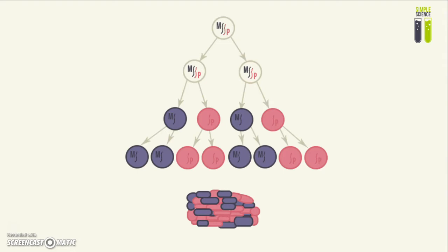For the sake of simplicity, I will use a female for this example. When the two gametes of the father and the mother fuse together, there will be one paternal X chromosome and one maternal X chromosome — those will be the two X chromosomes present in the zygote.